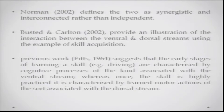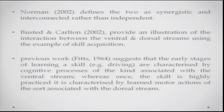Burstead and Carlton illustrated the interaction between ventral and dorsal streams during skill learning. In the early stages of learning a skill like driving, when you are getting familiar with the consoles, gear, and pedals, you are using the ventral system more. Once the skill is formalized and practiced, the dorsal stream becomes more useful — your hand automatically goes to the gear to change it without consciously looking, because you already know its function and location.